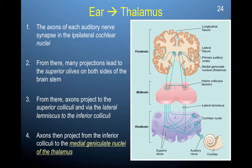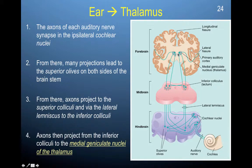Auditory information travels through the thalamus. Visual information travels through the thalamus via the lateral geniculate nucleus, and auditory information travels through the thalamus via the medial geniculate nucleus. So the lateral geniculate nucleus is for visual information, and the medial geniculate nucleus is for auditory information.